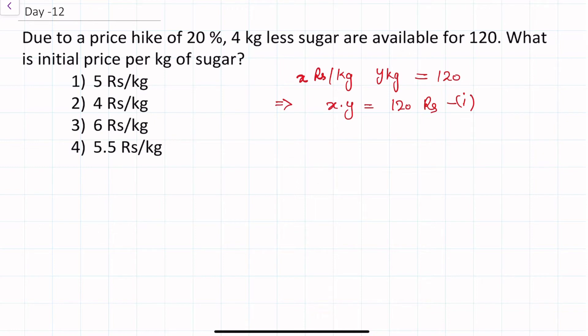Now initially it is x rupees per kg. Now there is a price hike of 20%. The price which is x rupees per kg increases by 20% hike, which means x upon hundred into 20. The new price will be x plus x upon 5 which is equals to 6x upon 5.